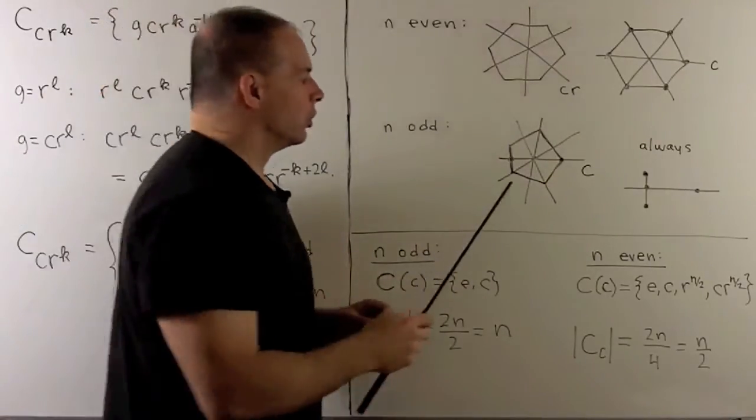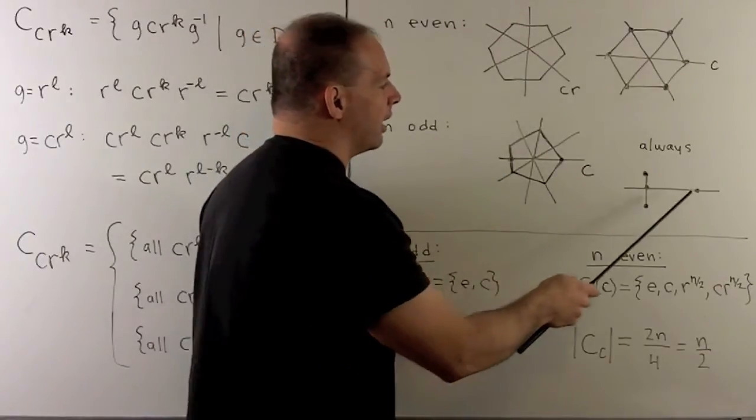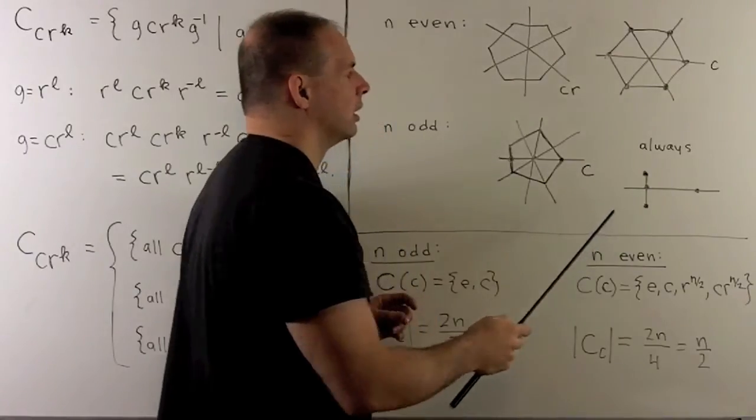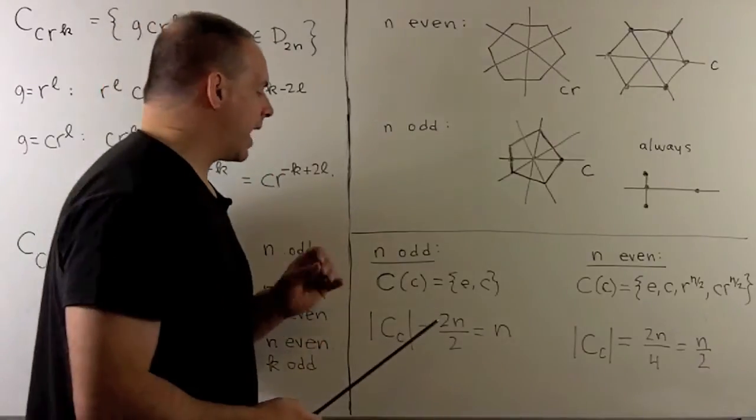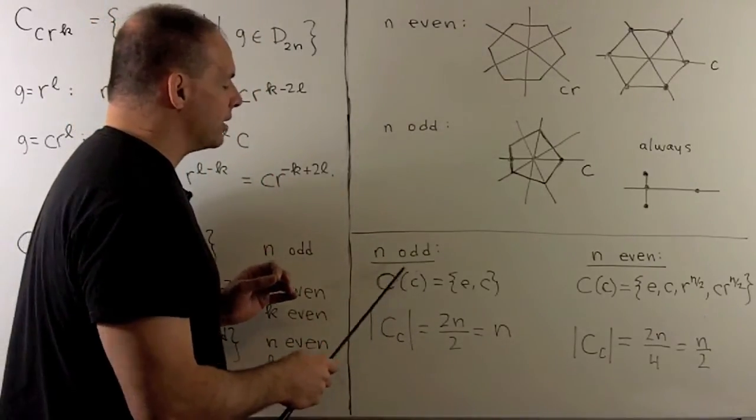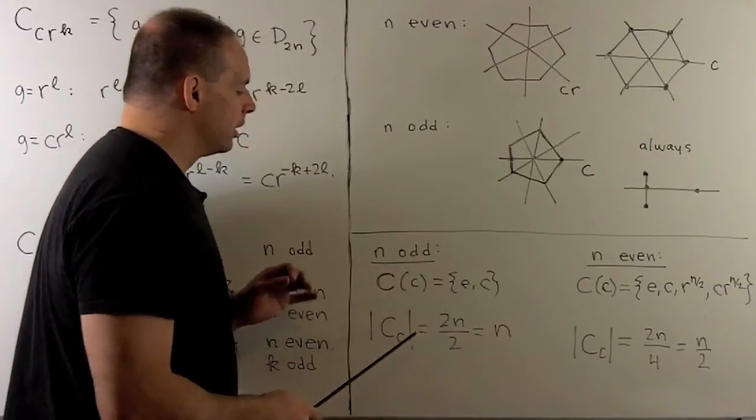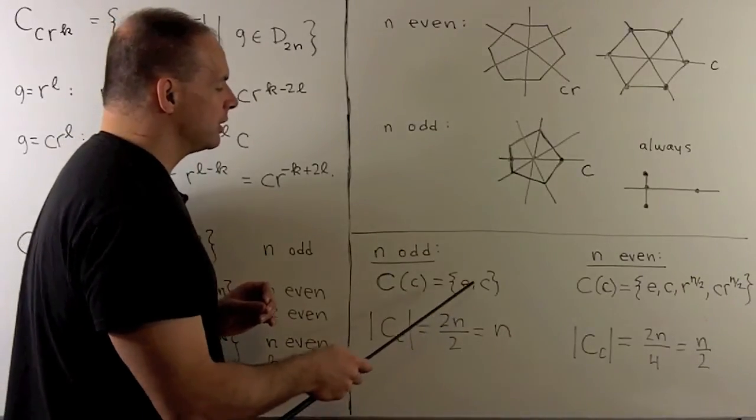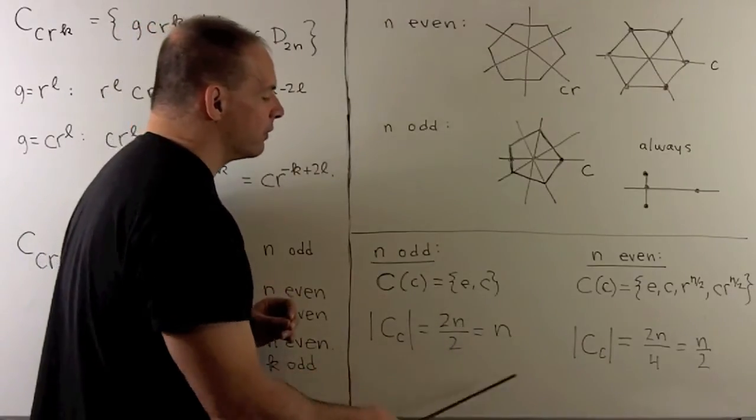When n is odd, you'll note, all reflections are going to be of the same form. We're going to have a vertex with an opposing edge. If we check our cardinality equation, when n is odd, if I take the centralizer of the element c, we're just going to get E and c itself. If we compute the cardinality, we have 2n, the order of the group, divided by the order of the centralizer, gives us n, and that's the number of reflections.